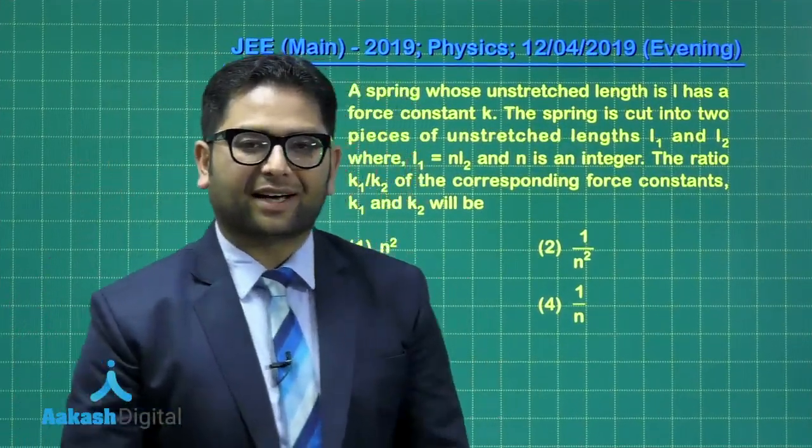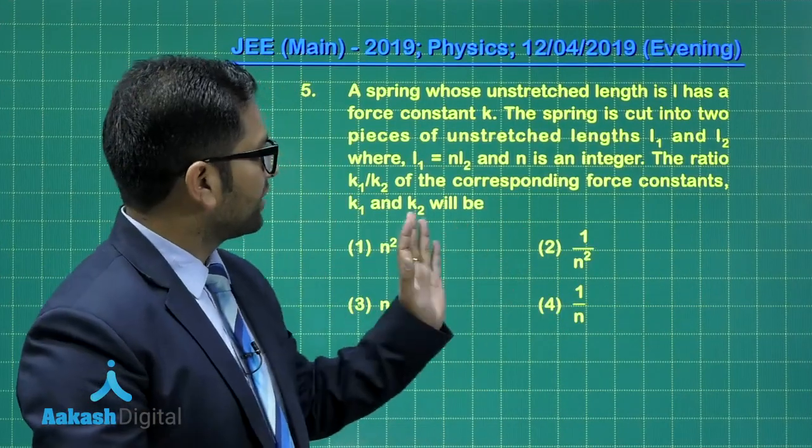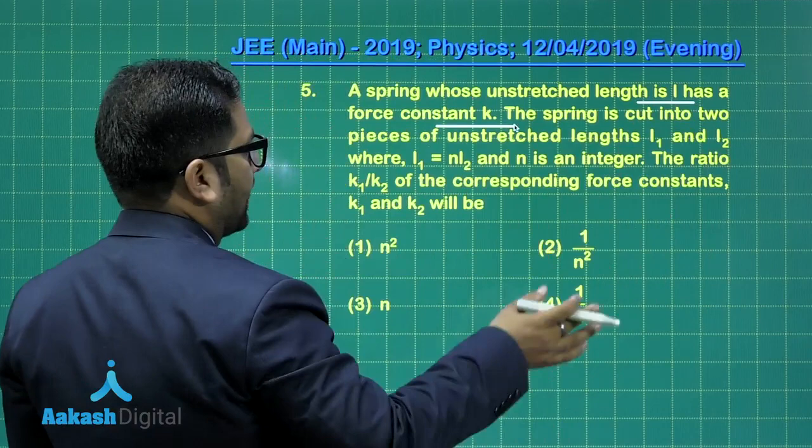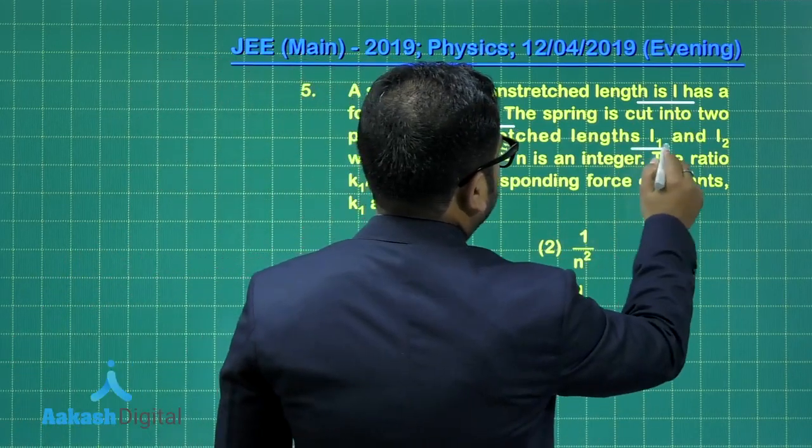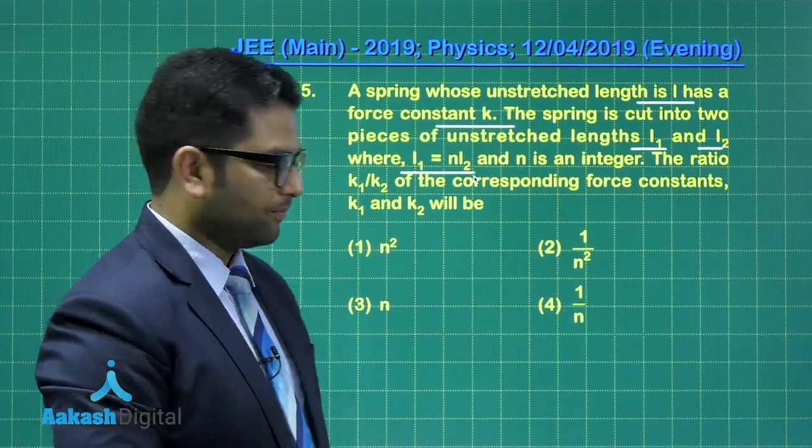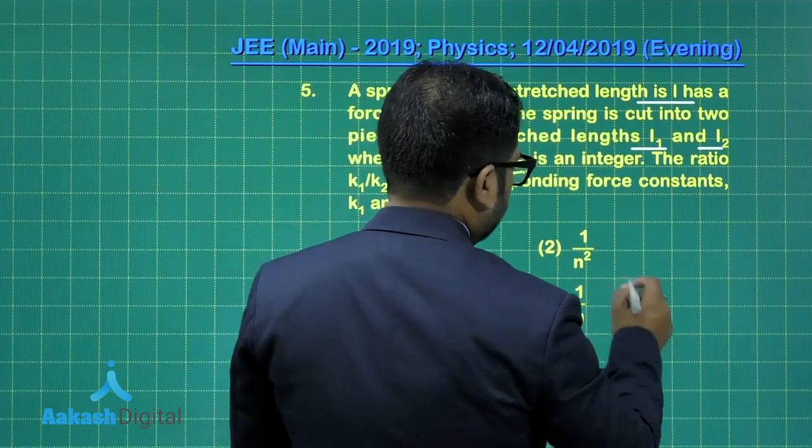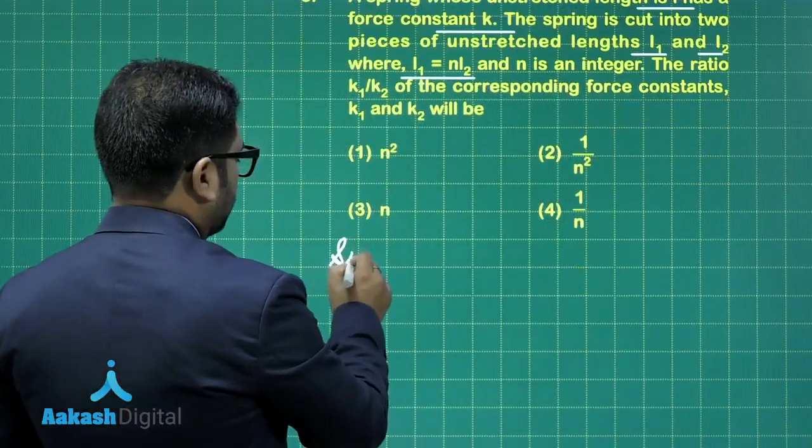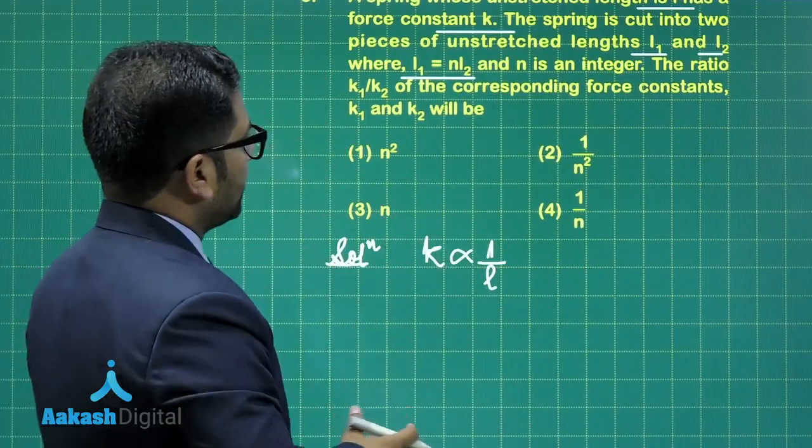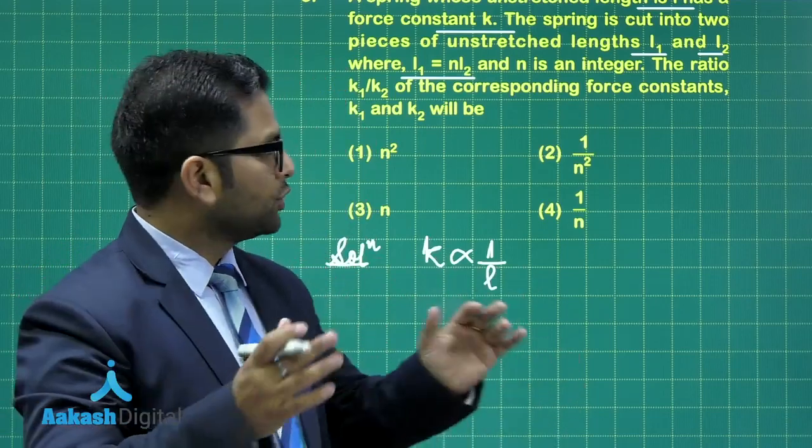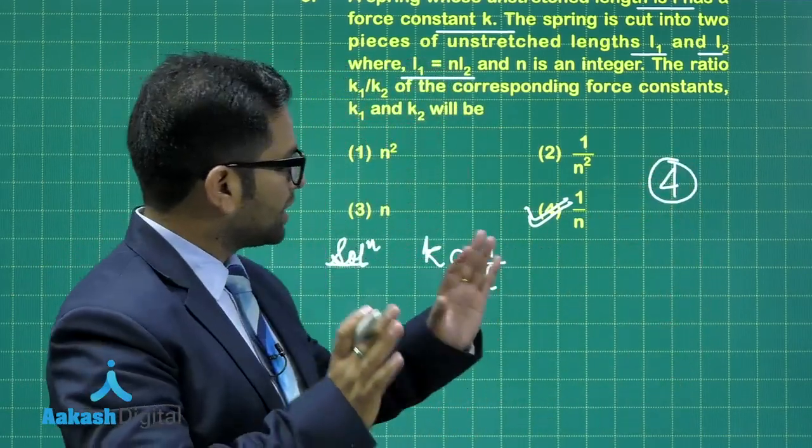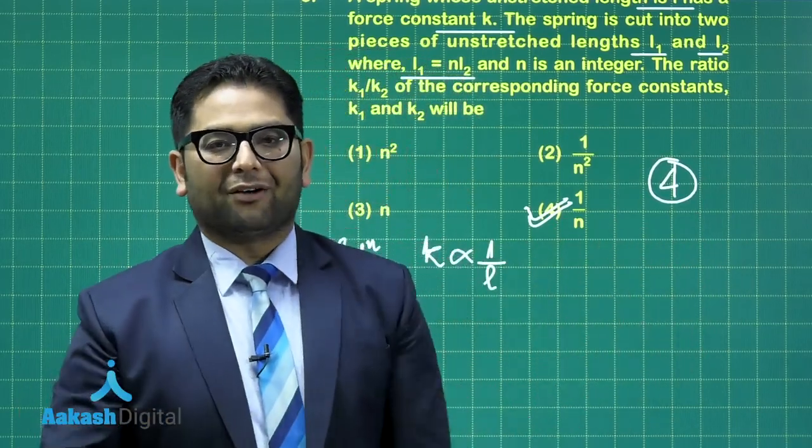After that bit of lengthier calculation, you get a respite here. This one is straightforward - spring is there whose unstretched length is L and has a force constant K. And this is cut into two pieces of unstretched lengths L1 and L2, and even this relationship is there. We need to calculate the ratio of K1 is to K2. And this one comes with the very common fact that we use that whenever a spring is cut, then we know the spring constant is inversely proportional to the length. Now here you could see K1 with L1, K2 with L2. You just make a division of K1 divided by K2. You would get option number four as the correct one. So this was a cool breeze in the middle of the calculation.